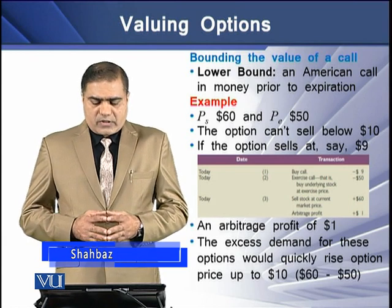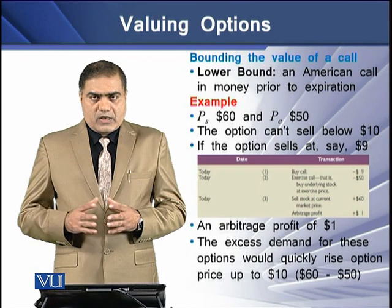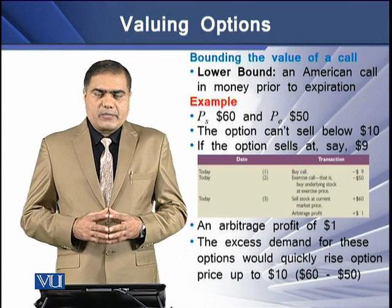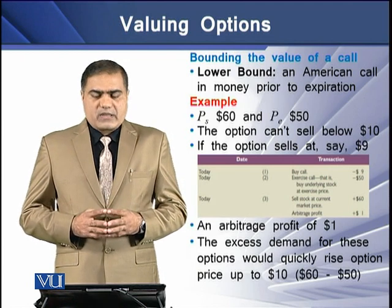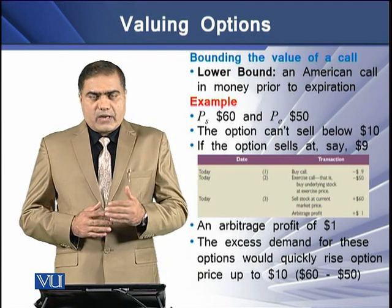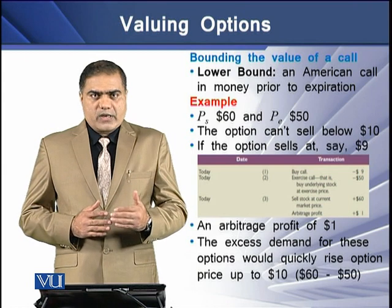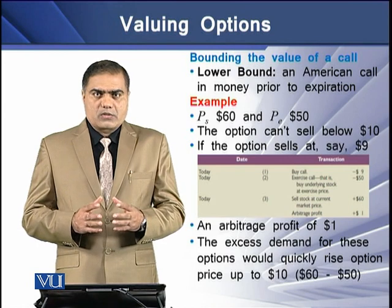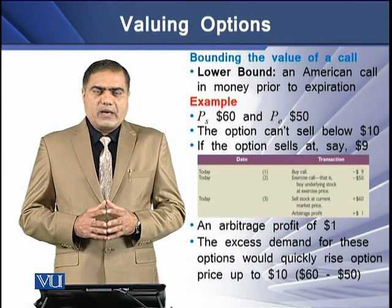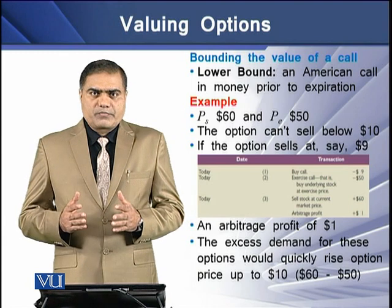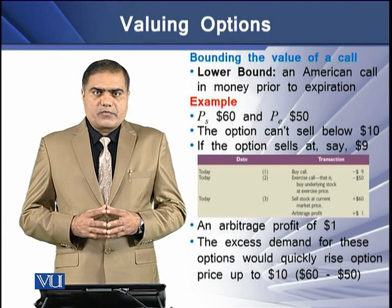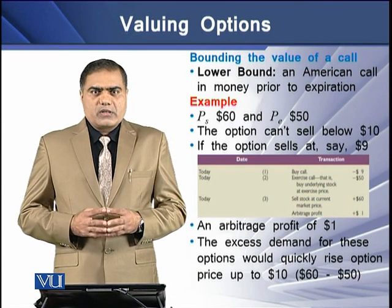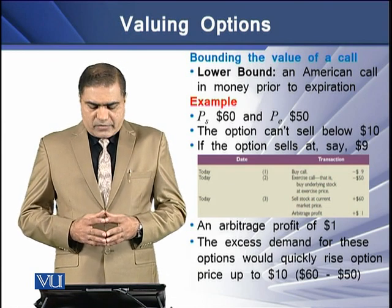This option cannot sell below $10. If the option sells at $9, there is an arbitrage profit of $1. Buying the call at $9 with the exercise price of $50 makes a total cost of $59. Selling the stock at $60 yields a profit of $1 to the holder of this contract — this $1 is termed an arbitrage profit.